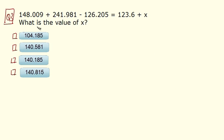Question 3. You have to find out the value of x from this expression. We can take x on the right hand side and bring all the other terms to the left hand side of the equal to. So we have 148.009 plus 241.981 minus 126.205. Then again this comes to the left hand side, so it becomes minus 123.6 equals to x.